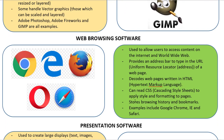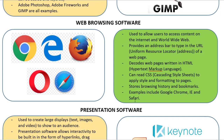Next we have web browsing software, used to allow access to content on the internet and the World Wide Web. It provides an address bar to type in a URL — uniform resource locator — or in common terms, the address of a web page. It decodes the web page, which is written in HTML (hypertext markup language), and it can read CSS style sheets (cascading style sheets) to apply styles and formatting to the page. It also stores browsing history and bookmarks. Good examples are Google Chrome, Internet Explorer, and Safari.